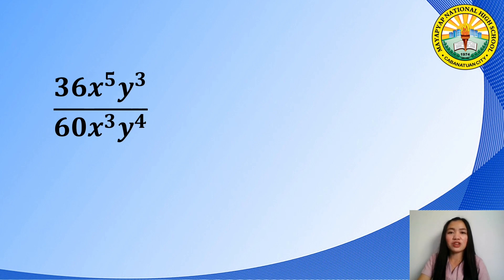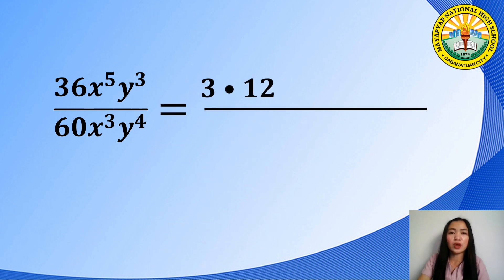In simplifying Rational Algebraic Expressions, we should always consider both the numerator and the denominator. Let us take into consideration the numerical coefficients. Since 36 and 60 are both divisible by 12, we can write 36 as 3 times 12 — instead of its prime factors 2 times 2 times 3 times 3 — and 60 as 5 times 12 instead of 2 times 2 times 3 times 5.